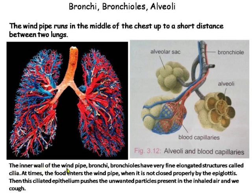The inner wall of the windpipe and bronchioles have very fine, elongated, finger-like structures called cilia. At times, food enters the windpipe when it is not closed properly by the epiglottis. When this happens, the ciliated epithelium pushes out the unwanted particles present in the inhaled air, and thus we cough.